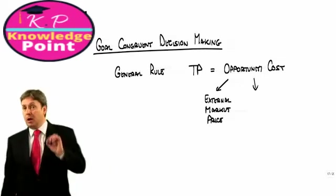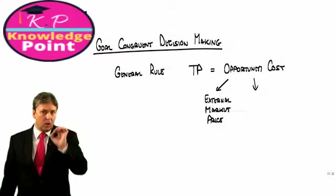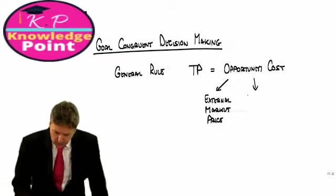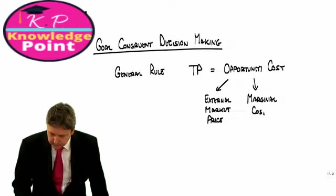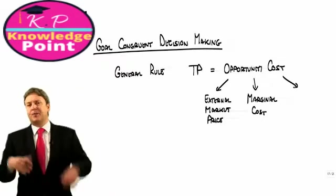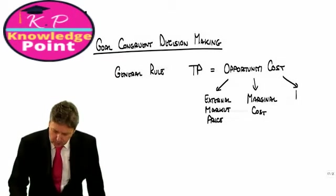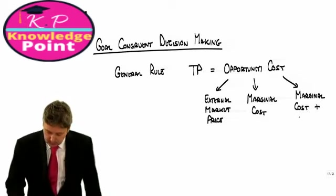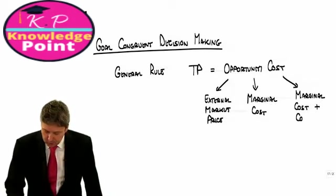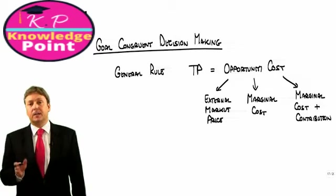If, however, there is no market, the good is only transferred internally and there is no market externally, it's possible that the opportunity cost is marginal cost. Or alternatively, if there is any form of constraint or limitation in the supplying division, we may find that the opportunity cost is the marginal cost plus some contribution measure to reflect the fact that there is scarcity in the supplying division.